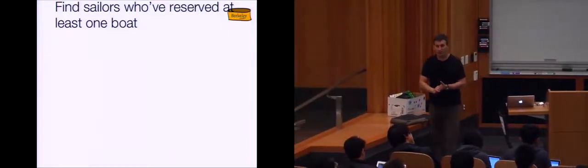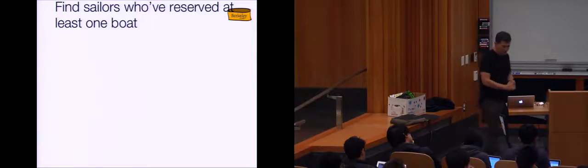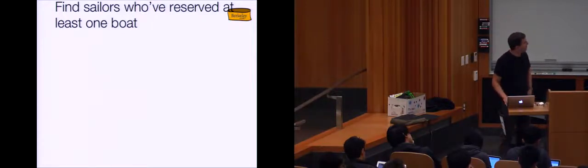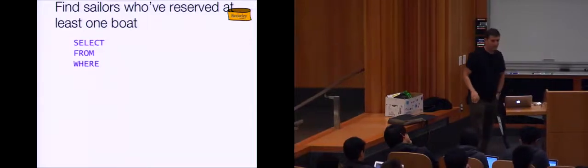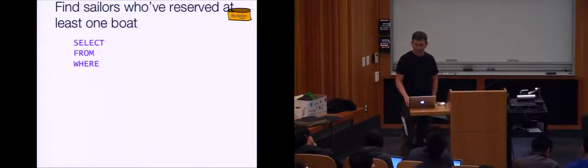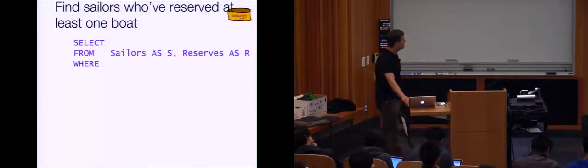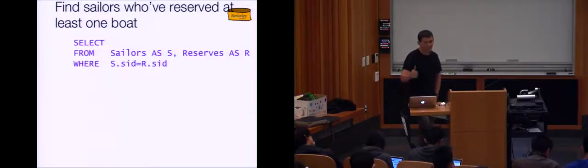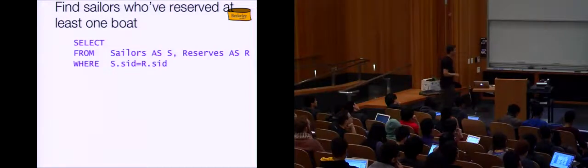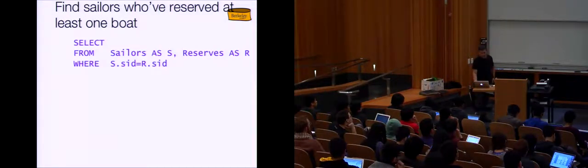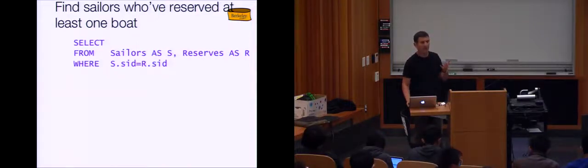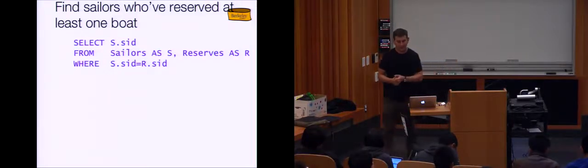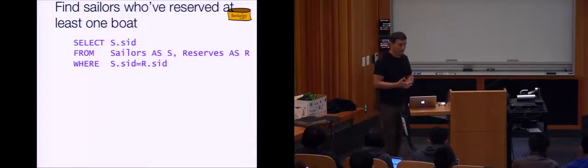Find sailors who've reserved at least one boat. It's going to involve the sailors table and the reserves table joined on SID — that key/foreign-key relationship where reserves references the primary key of sailors. The output pairs sailors with their reservations. Any sailor that has a reservation has reserved a boat. Would DISTINCT make a difference in this query? If we said SELECT DISTINCT SID — let's think about it. Sailors.sid is a primary key, so each sailor appears only once. Does that mean no duplicates are possible?